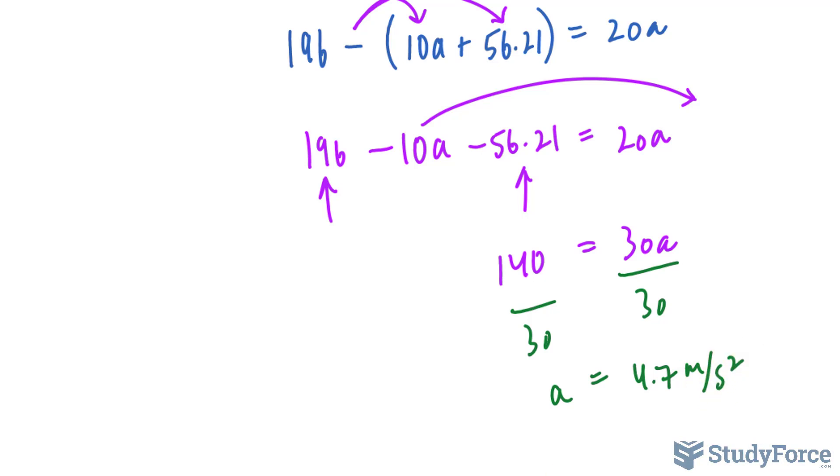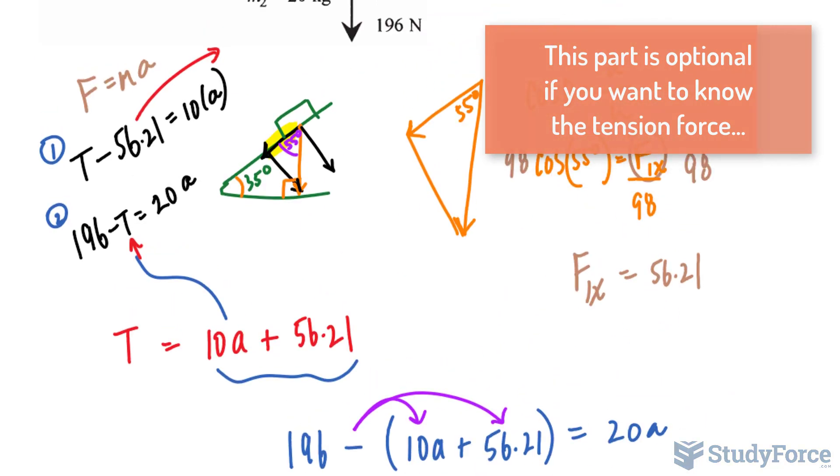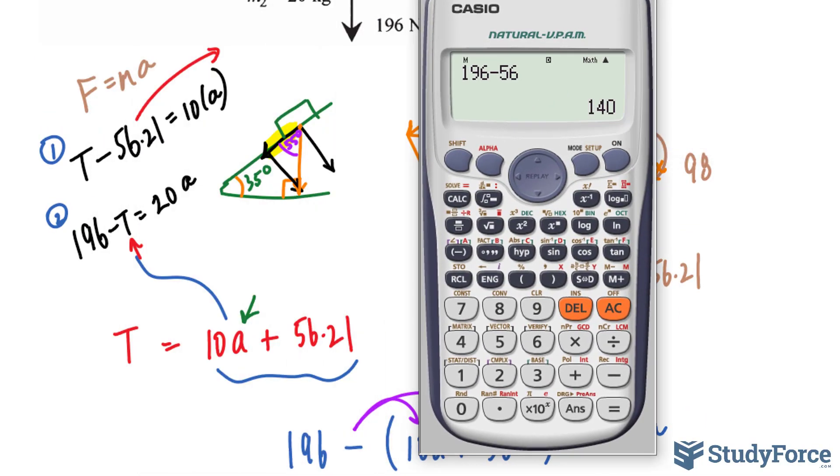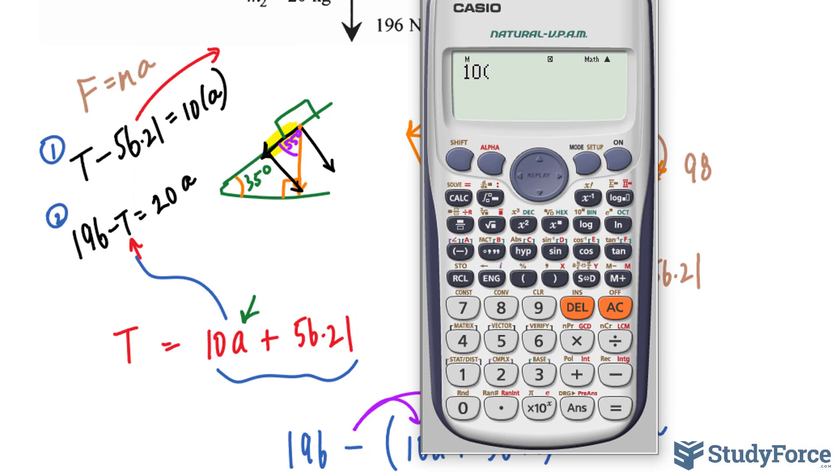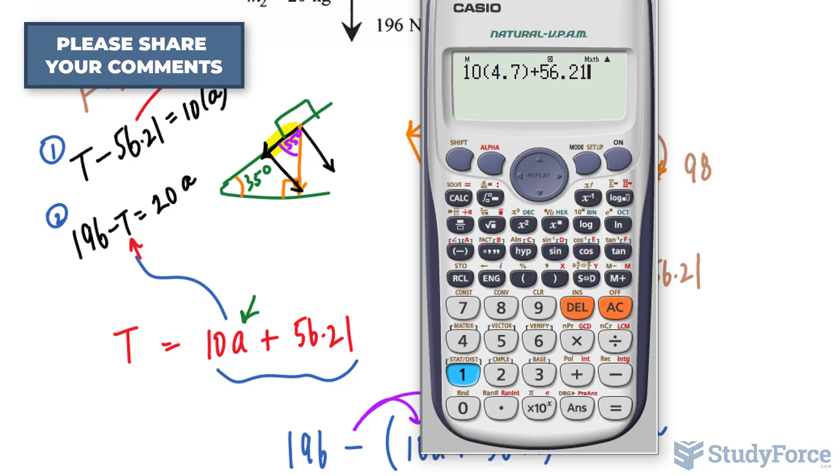Now keep in mind that the accelerations are the same for the system because the masses are linked together with a cord. Now I will take this value and substitute it right into there because I can get the tension. We have 10 times 4.7 plus 56.21.